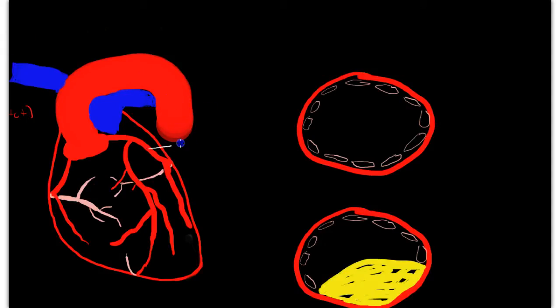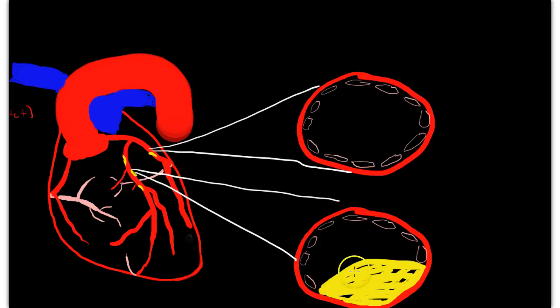So here we have a cross-section of a normal coronary artery. And as you can see, it's wide open. There's nothing obstructing the lumen. Now, with patients that have coronary artery disease, they start to develop atheromas or fatty plaques in the coronary arteries. And what these plaques look like, if you look at the cross-section of the artery, we have a fatty plaque here that is partially obstructing the lumen of the vessel.